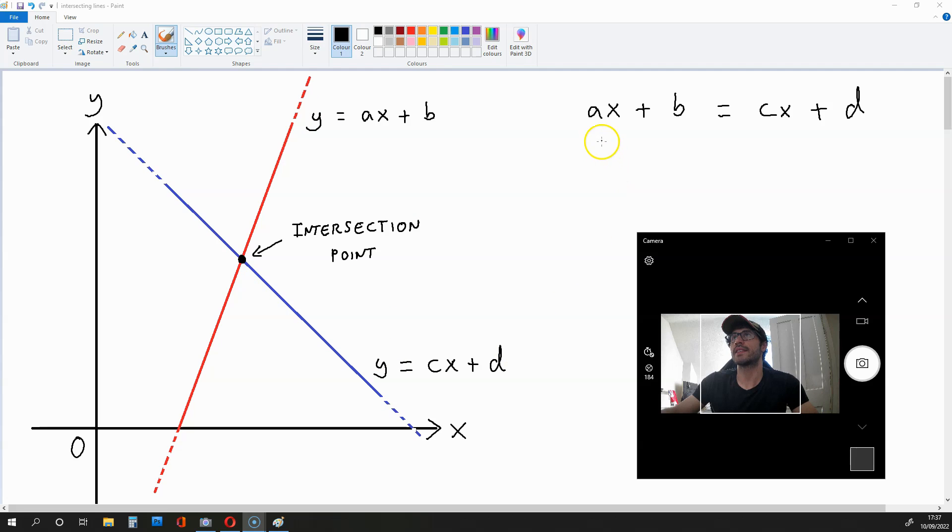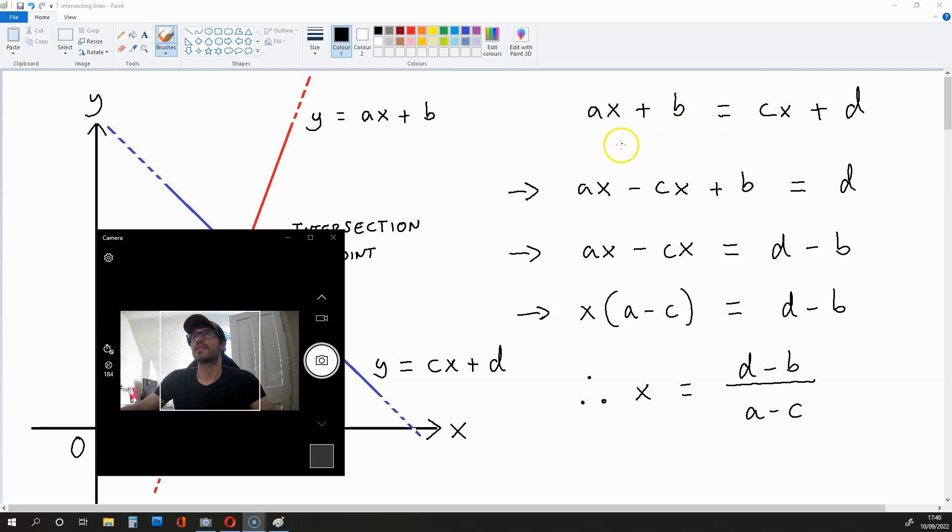So what we get is AX plus B is equal to CX plus D. And to get the X coordinate, we are simply going to isolate X.